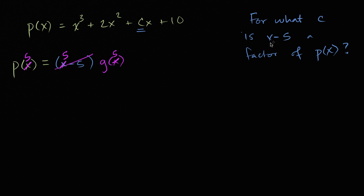So if x minus five is a factor, if and only if p of five is equal to zero. You could say that five is a root of the polynomial p. p of five is equal to zero. So let's just set p of five equal to zero, and then try to solve for c.